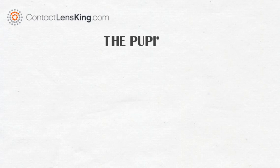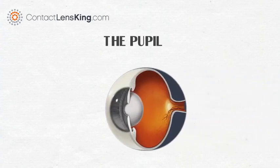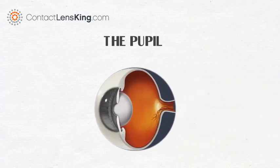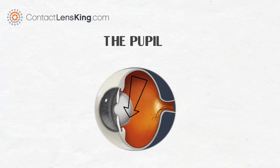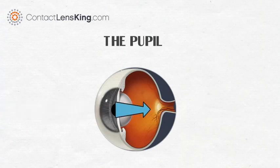Contactlensking.com presents the pupil. The pupil is a hole located in the center of the iris of the eye, allowing light to strike the retina. It appears black because light rays entering the pupil are absorbed by the tissues inside the eye.